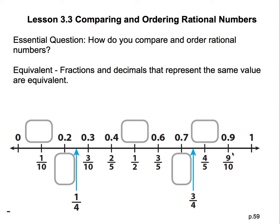The first thing I noticed about this number line is that it's divided into ten parts. It starts at zero, ends at one, and goes one, two, three, four, five, six, seven, eight, nine, ten. We need to fill in the blanks with the missing values. Looking at the top decimals, it goes 0.2, 0.3, four-tenths, six-tenths, seven-tenths, nine-tenths, and then finally one.